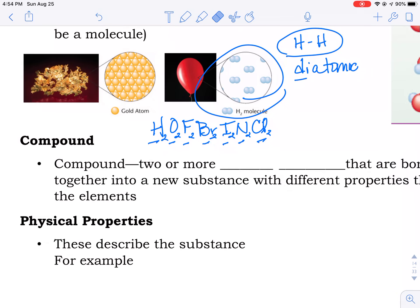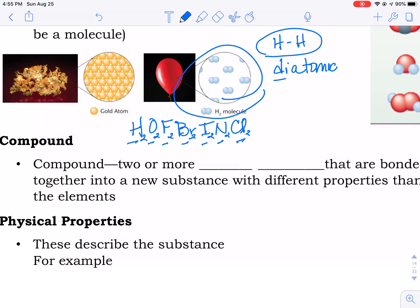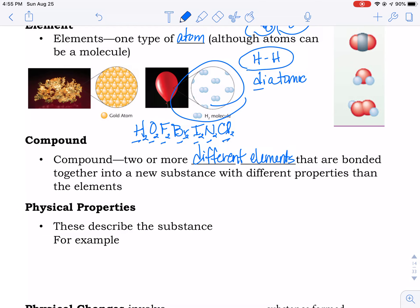A compound are two or more different elements that are bonded together in a new substance. Take water. Water is made of two hydrogens and one oxygen. Hydrogen gas is flammable. If you've ever heard of the Hindenburg, the Hindenburg was a big blimp and it was a Nazi blimp and it exploded over Elmhurst, Massachusetts, I think, because it was filled with hydrogen instead of helium. Hydrogen is a flammable gas. It will burn.